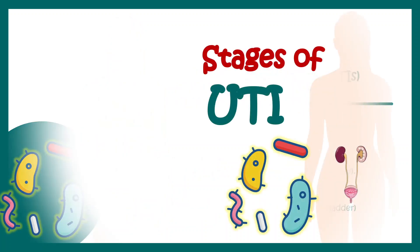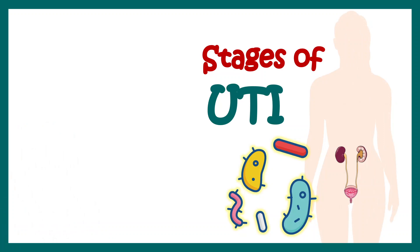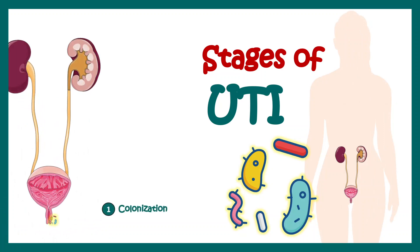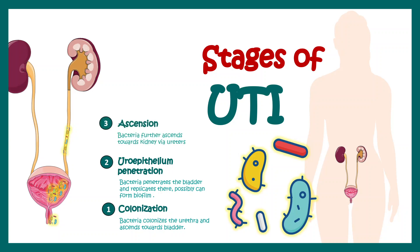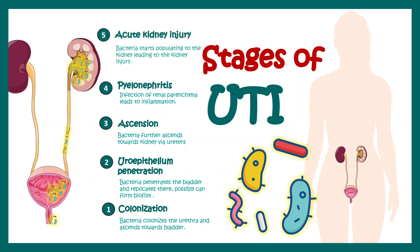There are different stages of UTI. The first stage is colonization, where bacteria form a small colony near the urethra and begin invasion. Then there is uroepithelium penetration, where bacteria invade the uroepithelium, infect the bladder, replicate, and possibly form biofilms. They then ascend through the ureter toward the kidney, where they can cause pyelonephritis — an acute kidney infection — and ultimately kidney injury if left untreated long-term.